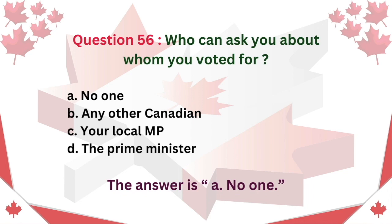Question 56: Who can ask you about whom you voted for? A. No one. B. Any other Canadian. C. Your local MP. D. The Prime Minister. The answer is A: No one.